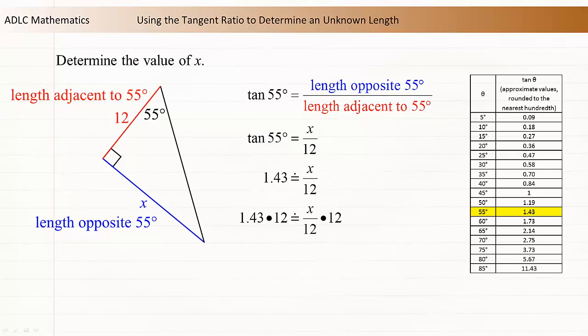x is divided by 12, so multiply both sides of the equation by 12 to isolate x. The 12's reduce, and 1.43 times 12 is approximately 17.2. The value of x is approximately 17.2.